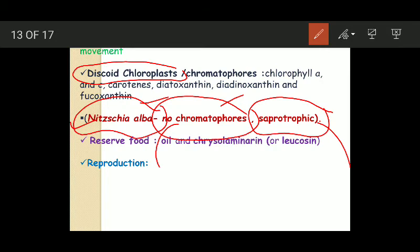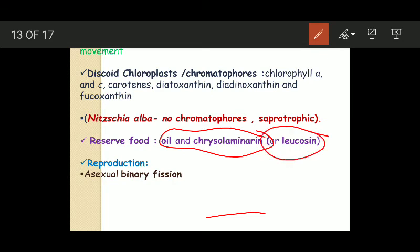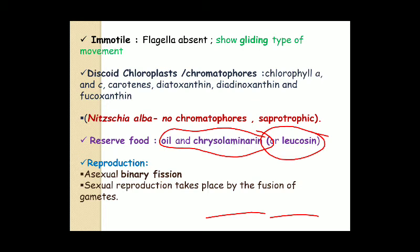Now their reserve food material. The reserve food material found in diatoms includes oil and chrysolaminarin. Chrysolaminarin is a special type of polysaccharide or leucosin. These represent the characteristic reserve food materials found in diatoms. Now their reproduction. They reproduce both by asexual as well as sexual means. Asexual reproduction occurs by binary fission and sexual reproduction takes place by the fusion of gametes. Some examples of diatoms: Triceratium, Pleurosigma, Navicula, Cymbella, Amphipleura, Nitzschia, Melosira, and finally Pinnularia.